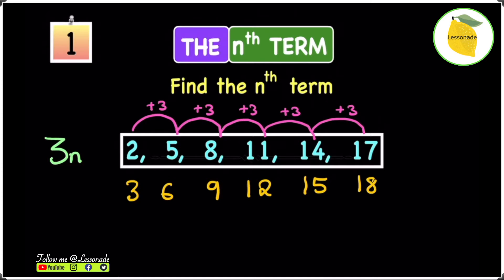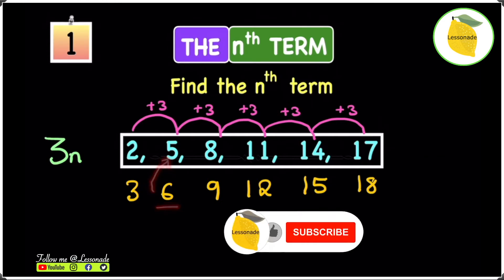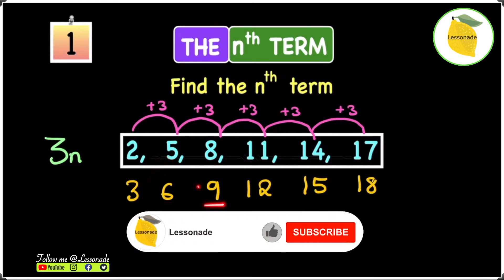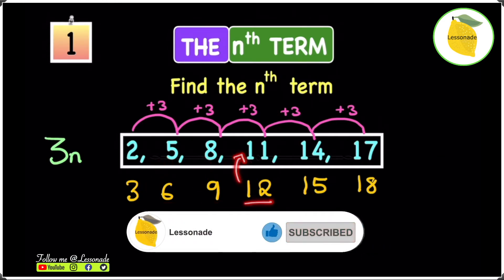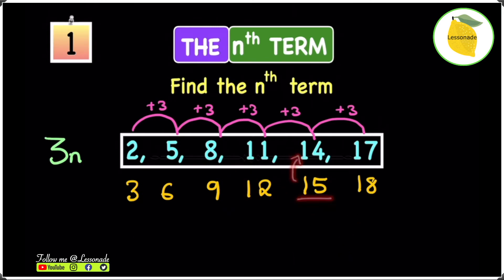The next thing we have to do is find the difference between the times table and the linear sequence itself. What do we have to do to 3 to give us 2? To 6 to give us 5? To 9 to give us 8? To 12 to give us 11? To 15 to give us 14? And the same for 18 to give us 17.